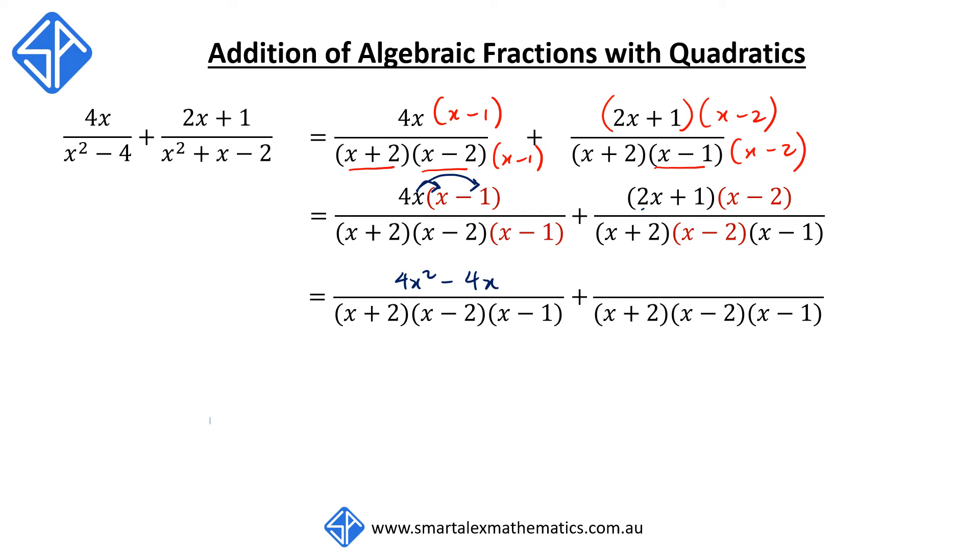And for the second fraction, we have got a binomial expansion. 2x times x is going to give us 2x squared. 2x times negative 2 is going to give us negative 4x. 1 times x will give us a plus x. And 1 times negative 2 will give us a negative 2. Now, the two middle terms here, minus 4x plus x, can be collected to give minus 3x.